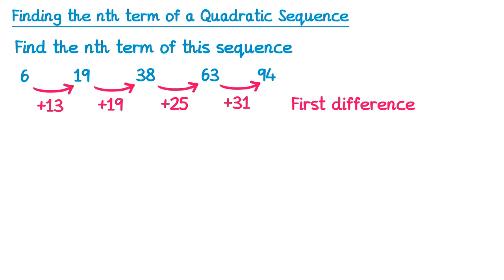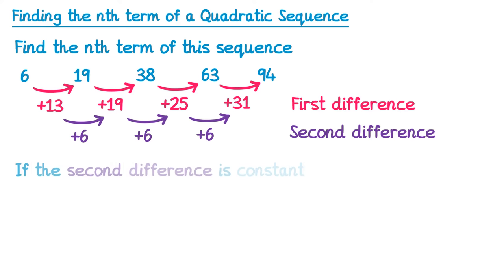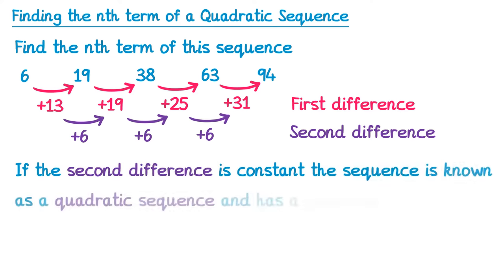But in a quadratic sequence the first difference won't be the same. Instead we need to do the second difference. Imagine the red numbers here are a sequence themselves, and find the difference between those. So to get from 13 to 19, we add 6. From 19 to 25, we add 6. 25 to 31 is add 6 again. This is known as the second difference, and notice this time the second difference is constant. It stays the same. We say that if the second difference is constant, the sequence is known as a quadratic sequence and has a quadratic nth term.